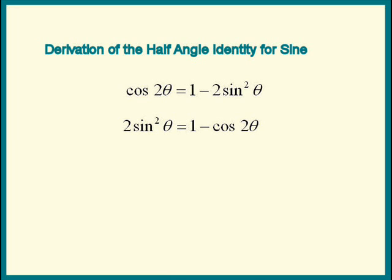Students often add or subtract the same term to each side, which makes it a lot more cumbersome than moving terms. Imagine adding 2 sine squared theta to each side and then subtracting cosine 2 theta from each side — that adds so many steps. It's better to get into the habit of moving terms left and right, changing the plus sign to a minus or the minus to a plus. Now we're ready to solve for sine squared theta: divide both sides by 2. We find that sine squared theta equals 1 minus cosine 2 theta over 2.